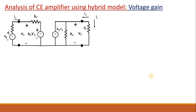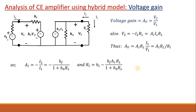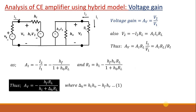To calculate voltage gain AV = V2/V1. We can write V2 = −I2·RL, and since AI = −I2/I1, we get V2 = AI·I1·RL. Substituting this, the primary expression for voltage gain is obtained. You can then substitute AI and RI — the current gain and input impedance — to get the final expression for voltage gain.